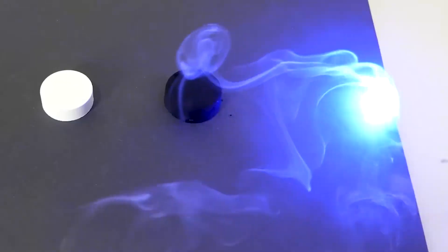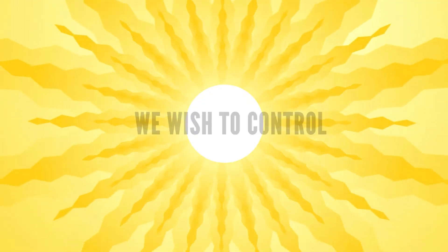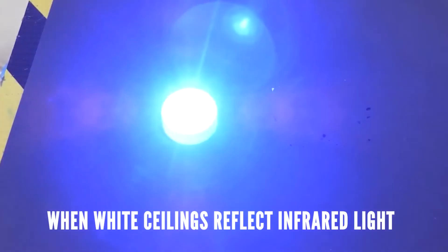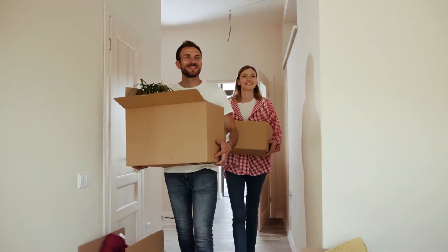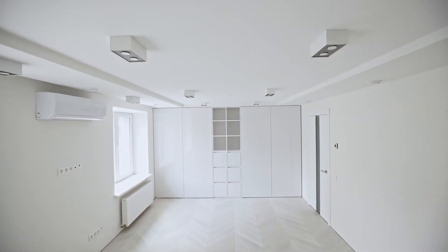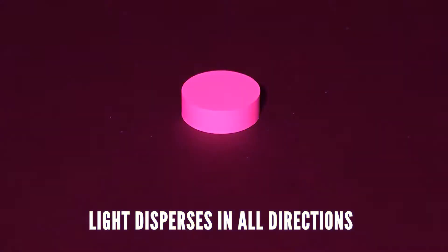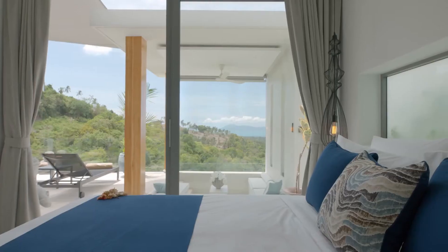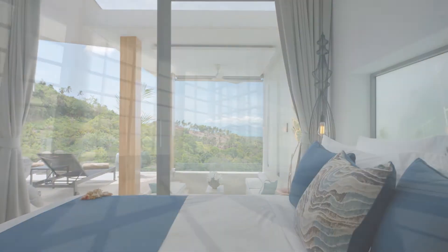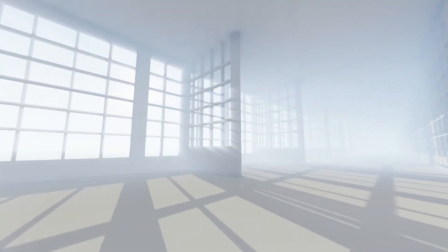Notably, it's the infrared light that's synonymous with heat, the very element we wish to control. When white ceilings reflect infrared light, they effectively send heat packing out of the room. But there's more to this story: white surfaces also excel at scattering light, a phenomenon where light disperses in all directions. When light scatters, it extends over a larger surface area, diminishing the amount of heat absorbed by the surface.